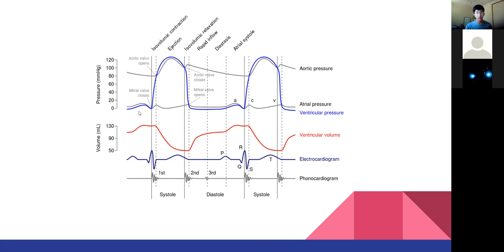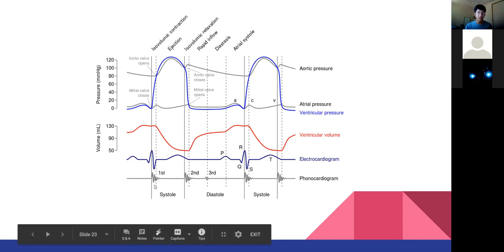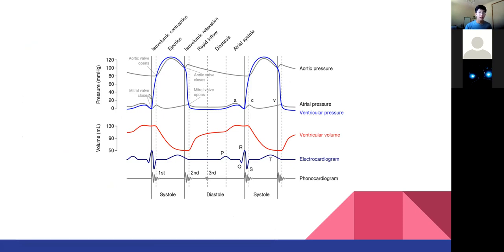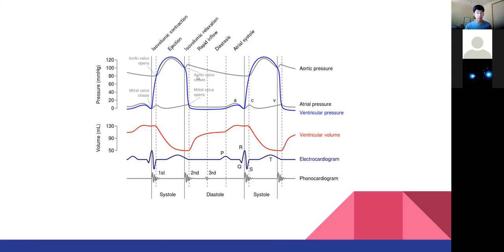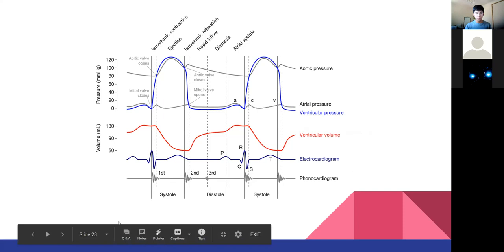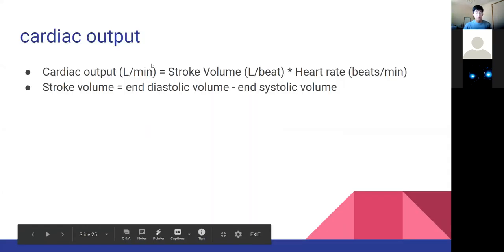Looking at the Wiggers diagram, we can see the pressure changes. The main thing to show is where our first and second heart sounds come from. Our first heart sound occurs in systole when the mitral valve closes - the mitral valve is between your left atrium and left ventricle. Whereas in diastole, that's where you get your second heart sound when your aortic valve closes between your left ventricle and the aorta. It's always the closing of the valves that causes our heart sounds.